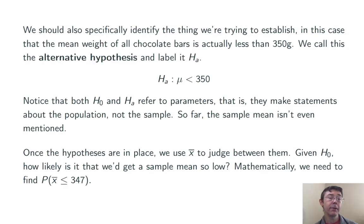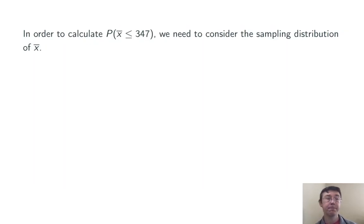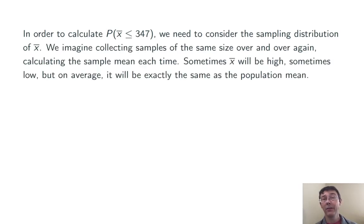Mathematically, we want to find the probability that X bar is less than or equal to 347 just through random chance when H naught is true. In order to compute that probability, we need to think about the sampling distribution of X bar. So we're going to assume that the company's claim is true, and then imagine going out and getting one sample of size 10, and then another, and another, and another. What is the distribution of X bar look like? Sometimes X bar will be a little high, sometimes a little low, but on average, it'll be exactly the same as the population mean.